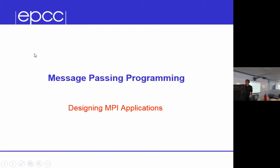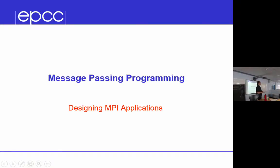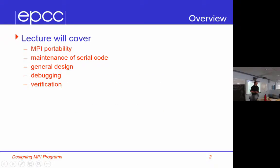I originally wrote this talk because people were saying, well, you've told me how to use individual MPI functions, but you've not told me how to write a real code. But in some senses, that's an impossible task. It's like you've been on a three-day course and you could cover all the syntax of C in an afternoon. So this is actually more about how you debug programs, but it's just general comments about MPI codes.